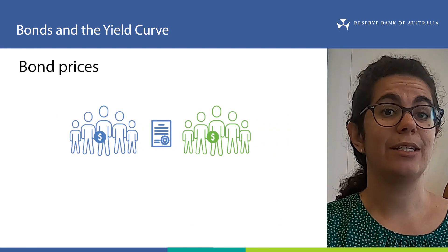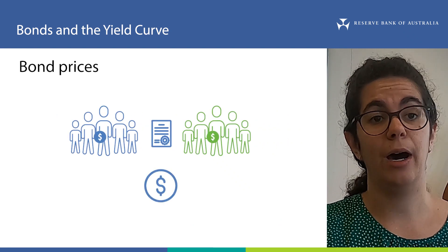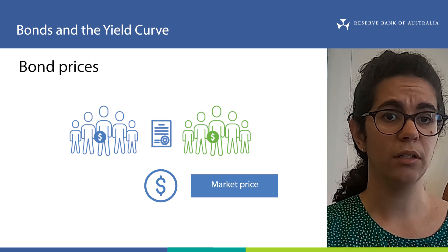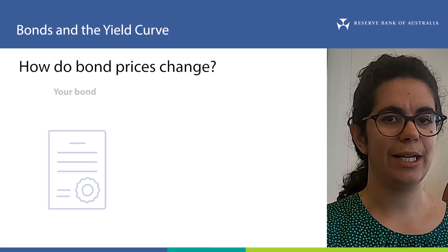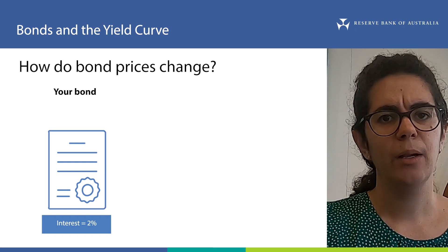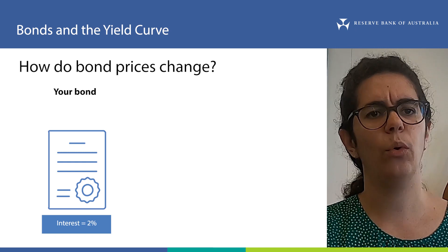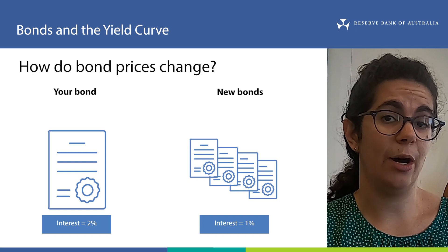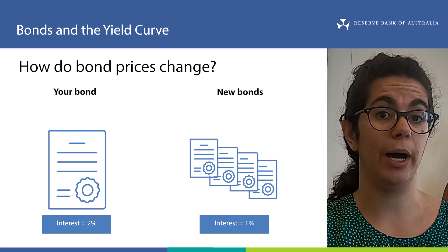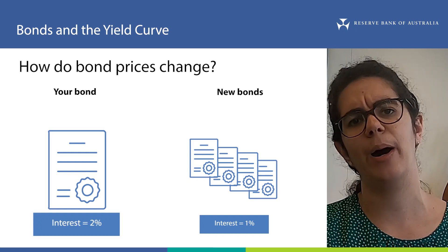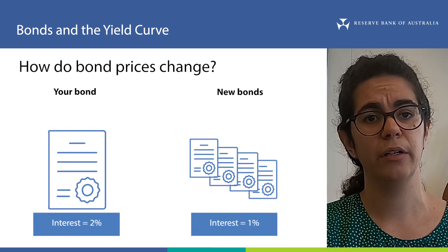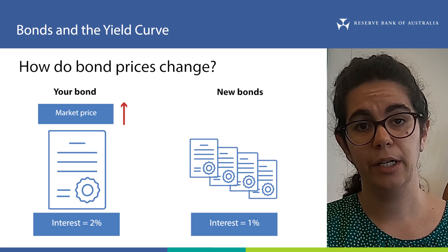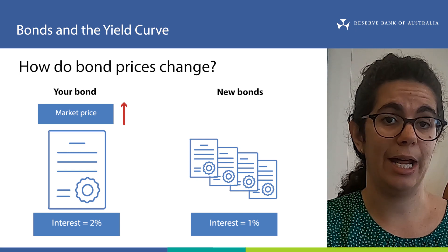Since investors can sell bonds in the secondary market, bonds have a market price, and this price can change over time as market conditions change. For example, if you own a bond that pays 2% interest per year but interest rates in the market fall and new bonds only pay 1%, your bond becomes more desirable. Investors prefer to buy your bond and receive 2% rather than 1%, so you'd be able to get a higher price for it in the secondary market because it's more in demand.